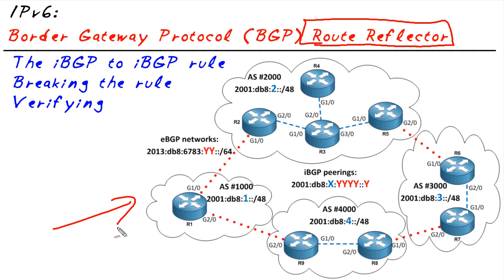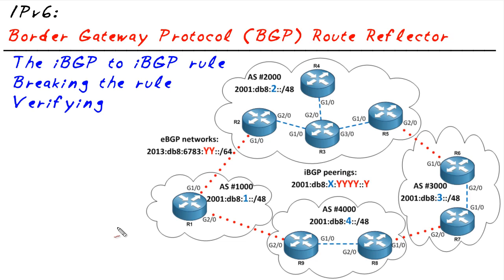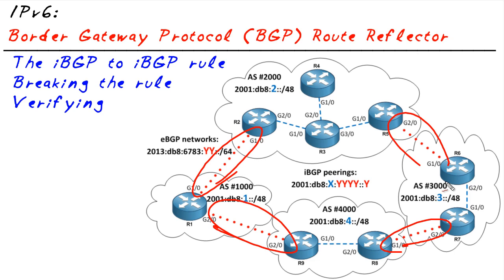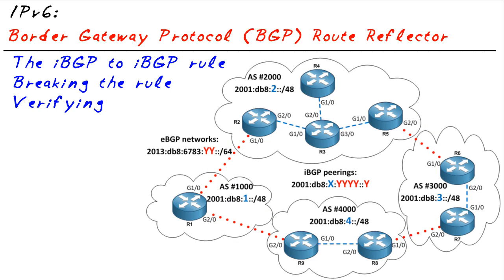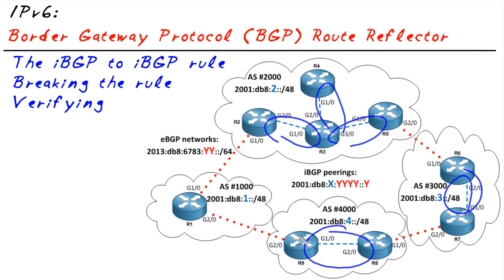Let's introduce ourselves to this topology. The red dotted lines represent the external BGP neighborships between the autonomous systems, and the blue dashed lines represent internal BGP neighborships within the AS.